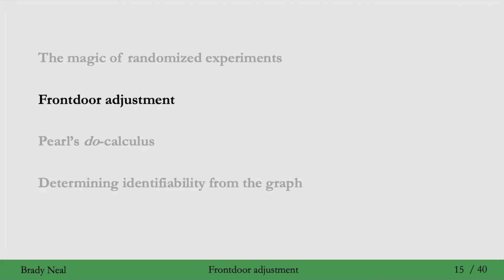Now that we've seen why randomized experiments are magic from a few different perspectives, we'll move on to more general identification beyond the backdoor adjustment for the rest of this lecture. And the first is the frontdoor adjustment.